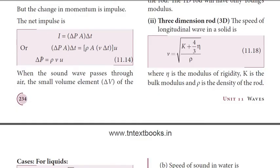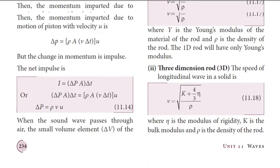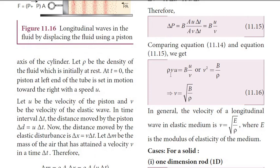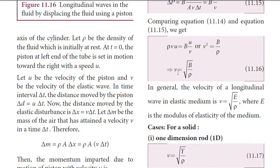From the earlier result, delta-P equals rho times v times u. Substituting into the bulk modulus equation: rho times v times u equals B times u divided by v. Cancelling u from both sides, rho times v squared equals B, therefore v squared equals B divided by rho. Taking the square root: v equals square root of B by rho.